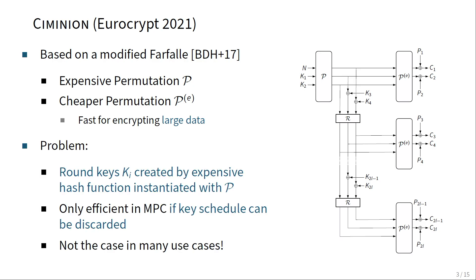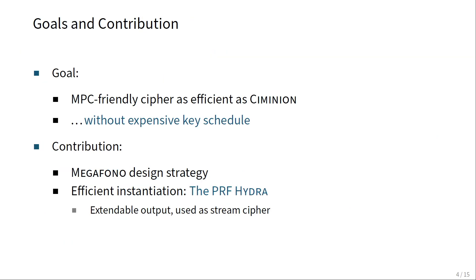However, Syminian also has a slight problem: its security analysis relies on the round keys added before each cheaper permutation being produced by a very expensive hash function. That means when we have a symmetric key shared in MPC and want to encrypt large amounts of data, we also have to compute this expensive key schedule in MPC. So Syminian is only efficient in use cases where we don't have to compute this key schedule.